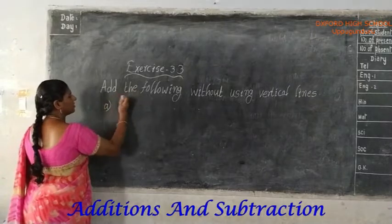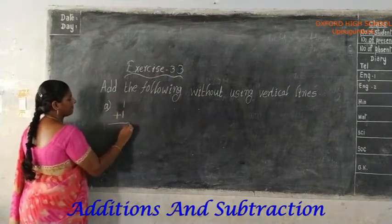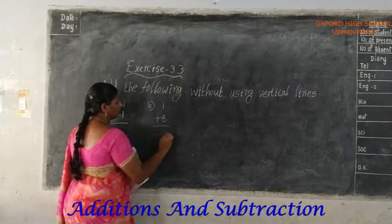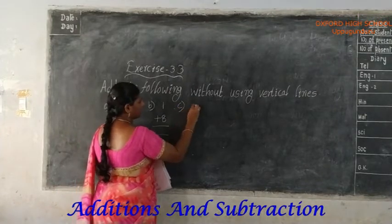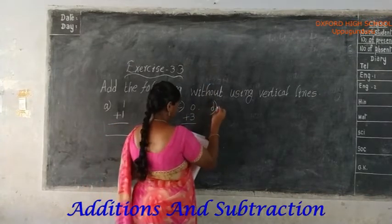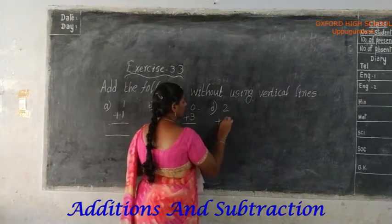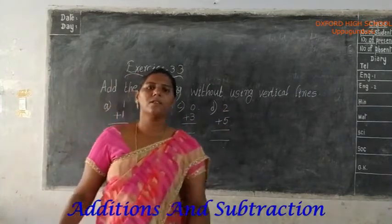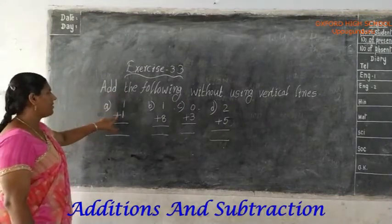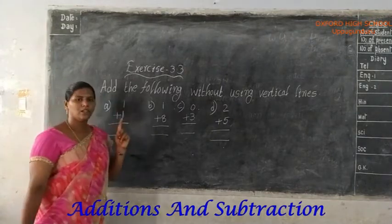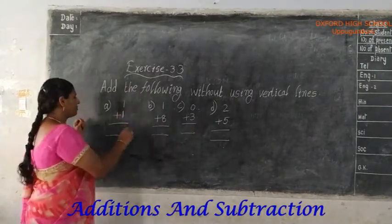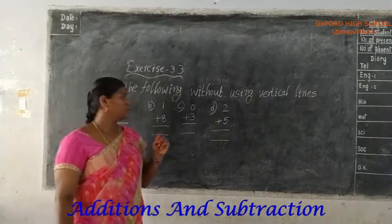First one: 1 plus 1. First number is 1, we want to take 1 finger. Next number is 1 — after we want to count. 1 after: 2. Answer is 2.